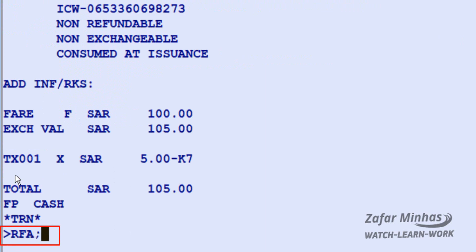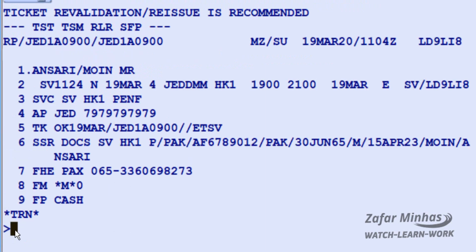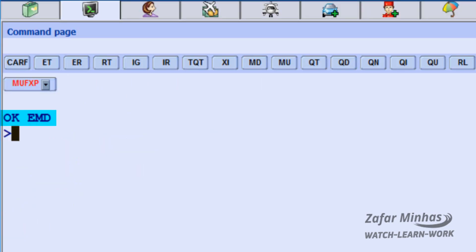Save changes for further action. To issue the penalty fee EMD, use TTM — issue EMD transaction — slash M miscellaneous record indicator plus 1, record number 1. You will receive an OK to EMD message. Then retrieve the PNR.